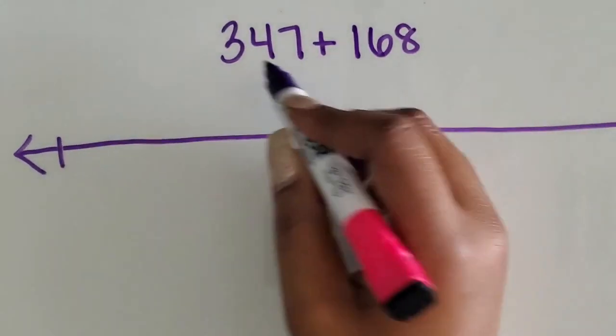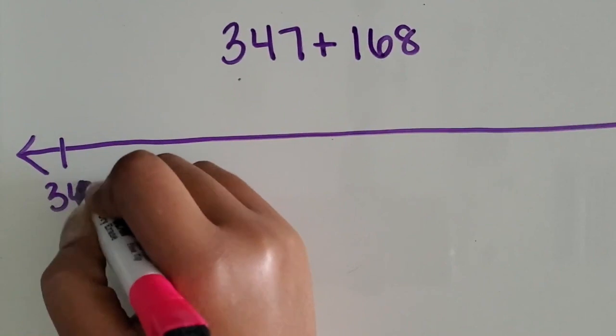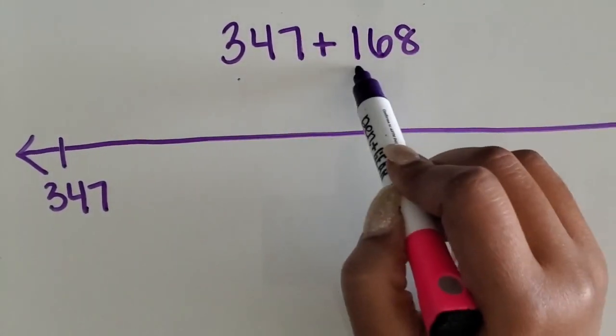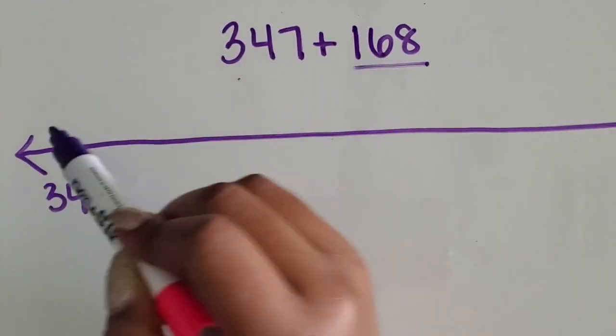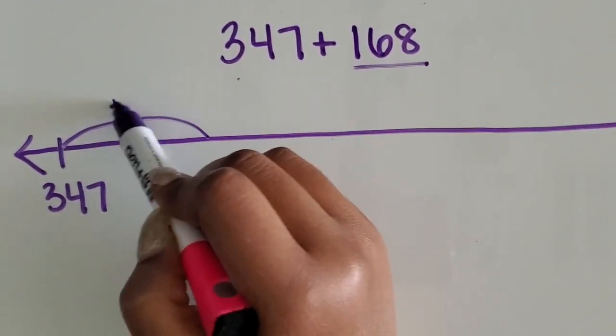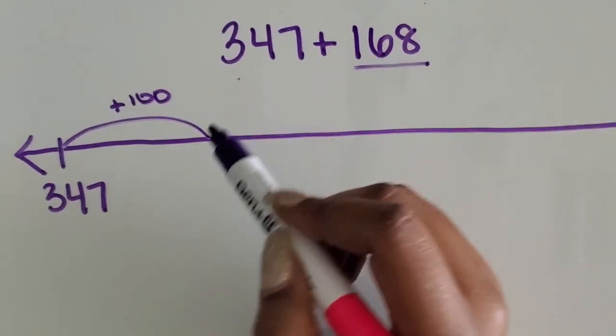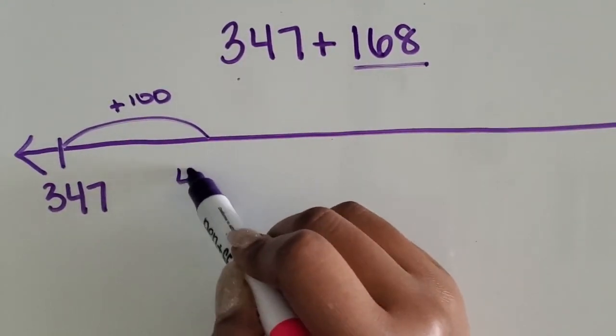You can start with the larger number, 347, and then we can add on the second three-digit number. There's a one in the hundreds place, so we can start by adding 100, which would give us 447.